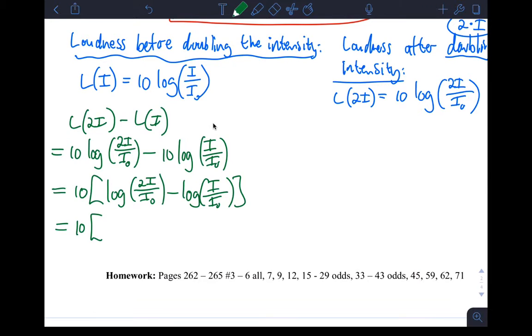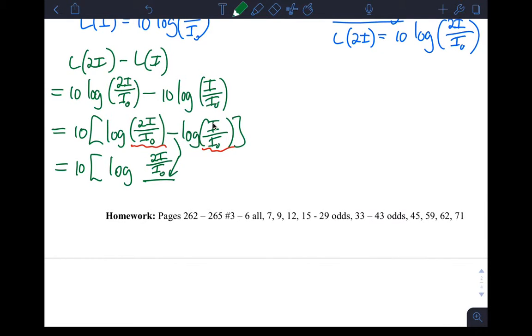Let's go back here and combine this as a single log. So I can do 10 times log. Now I'm going to have an interesting division here. I'm going to take the first thing I'm taking the log of and divide it by the second thing I'm taking the log of. Okay, and so if I do that, I get 2i over i sub zero. All right, that's the first thing I'm taking the log of. And then this minus turns into a division symbol. Okay, kind of like that. And then on the bottom, the second thing I'm taking the log of, so i over i sub zero. All right, so that's one big expression. And let me erase my arrow there. All right, so this is what I have.